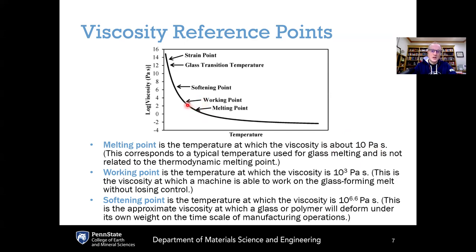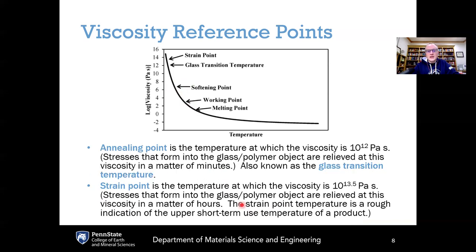If you take this high temperature liquid and cool it down, the next viscosity reference point is the working point, defined as the temperature at which the viscosity is 10 to the 3 pascal seconds. This is the viscosity at which a machine is able to work on the glass-forming melt without losing control — where we start to form the liquid into the shape we want, and the liquid can retain some of that shape. Continuing to cool, the next reference point is the softening point, the temperature at which the viscosity is 10 to the 6.6 pascal seconds, where a glass or polymer will deform under its own weight on the timescale of the manufacturing process.